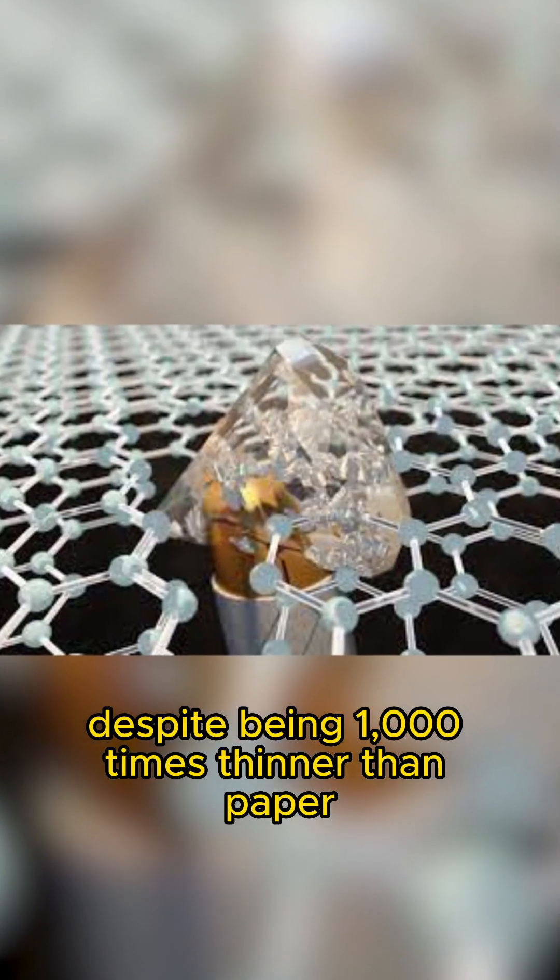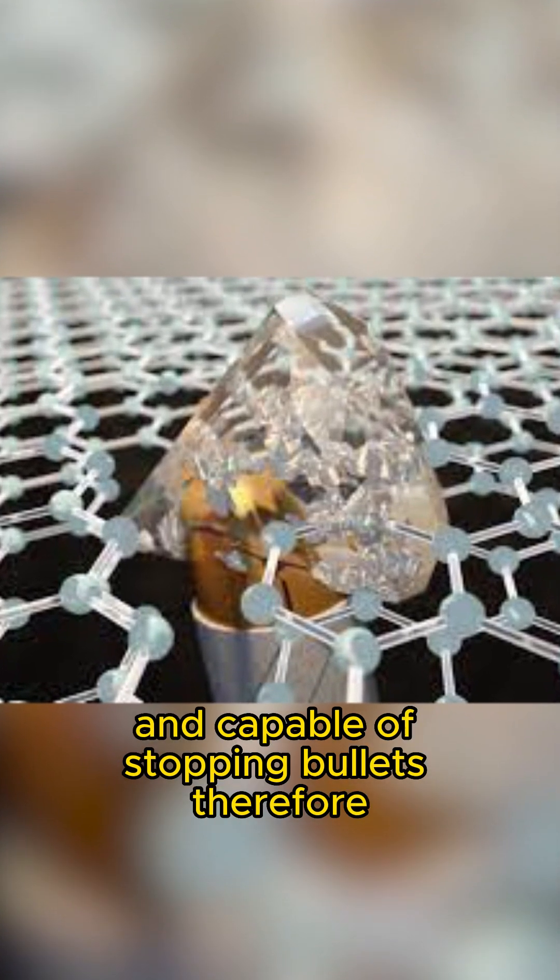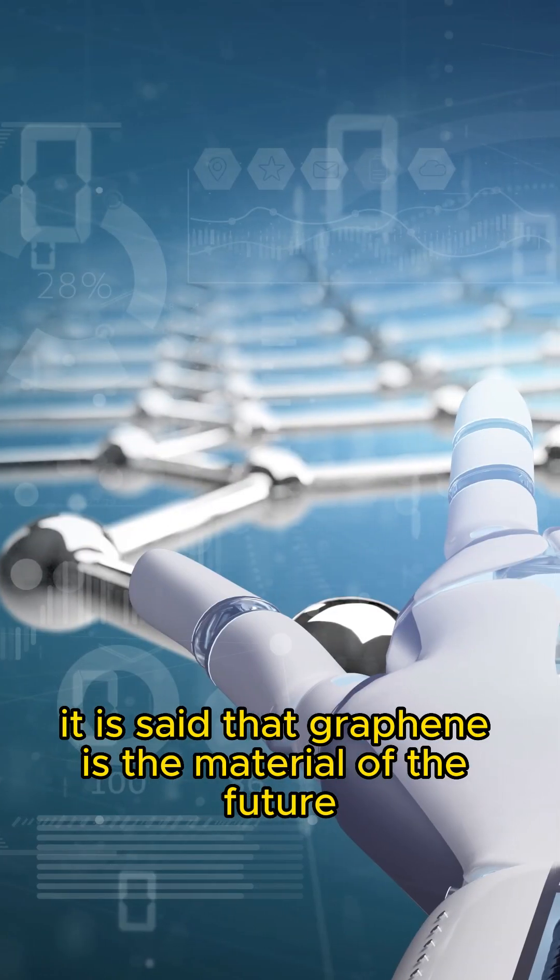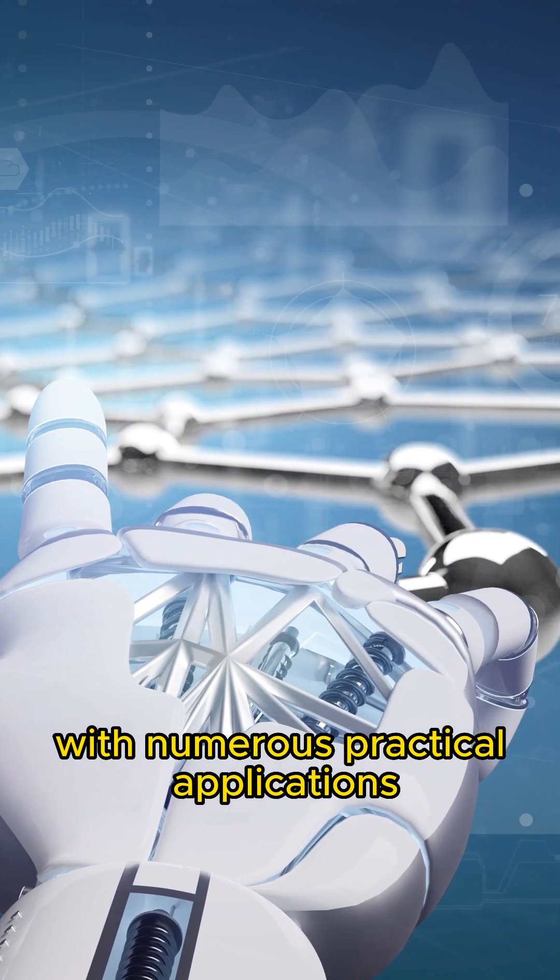Despite being 1,000 times thinner than paper, graphene is remarkably robust and capable of stopping bullets. Therefore, it is said that graphene is the material of the future with numerous practical applications.